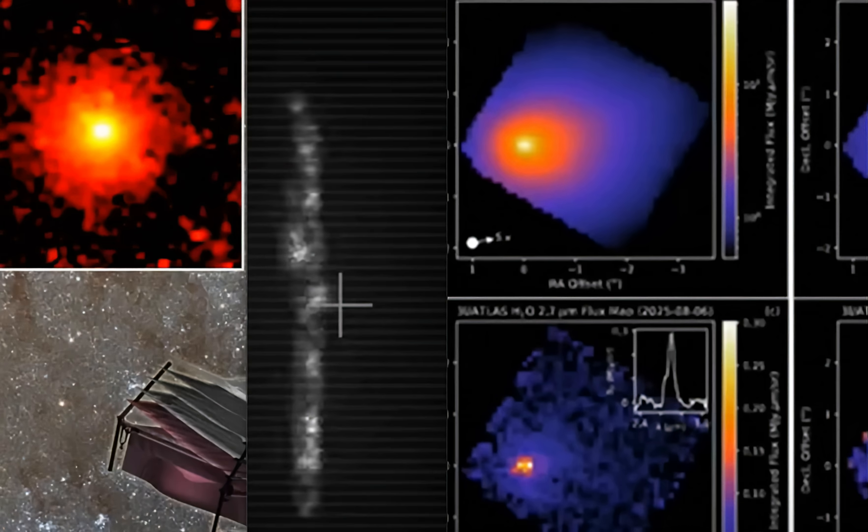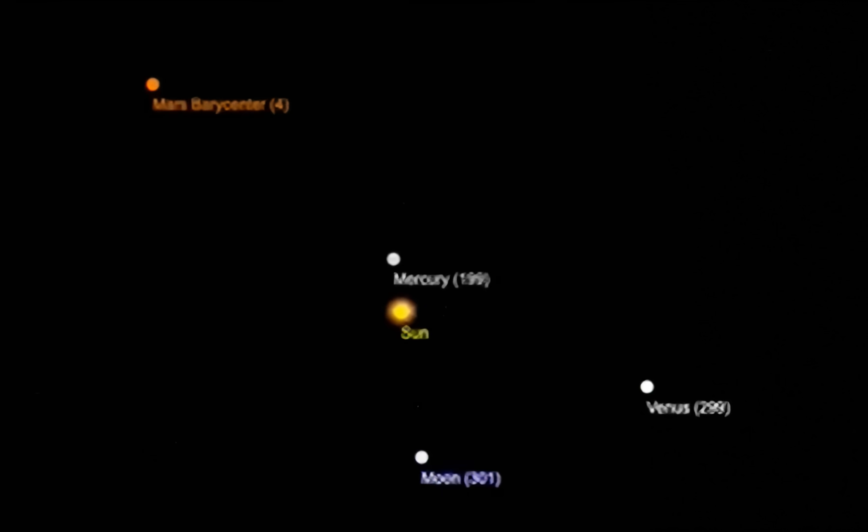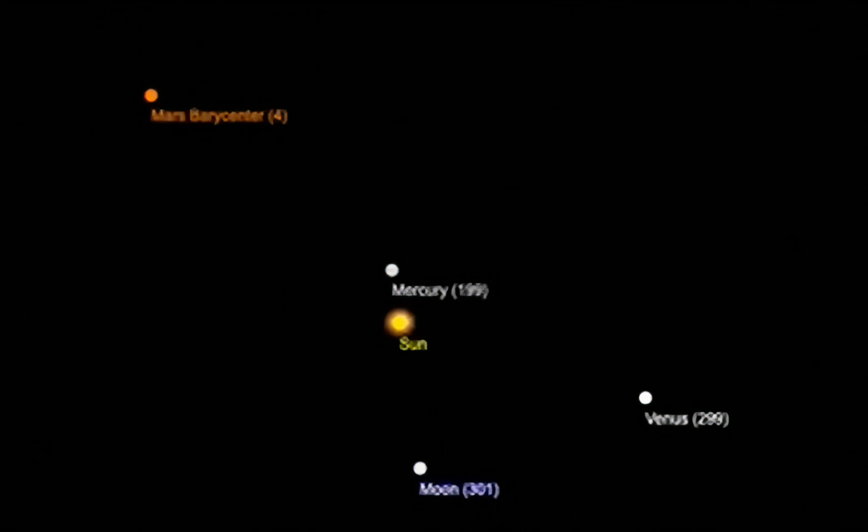So, the new images and the new data pointing at this, this is a Manhattan-sized object heading this way, 130,000 miles an hour. And the path that it takes through the inner solar system is peculiar. How it passes these planets almost in a, as if you're going to drop in to observe it type of manner.